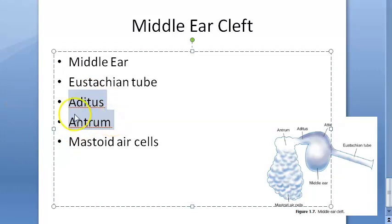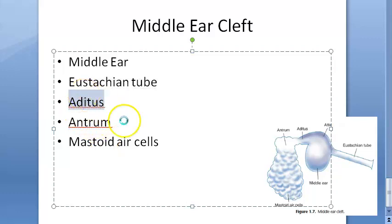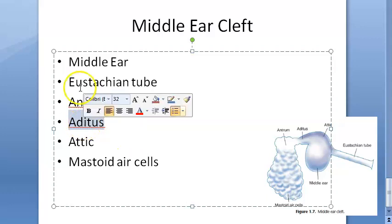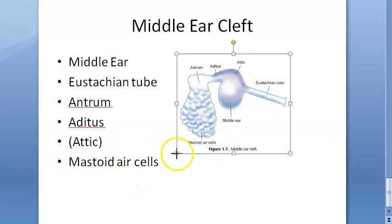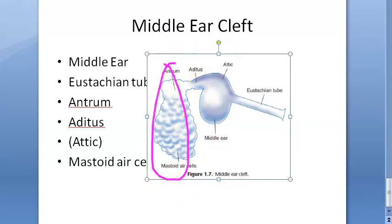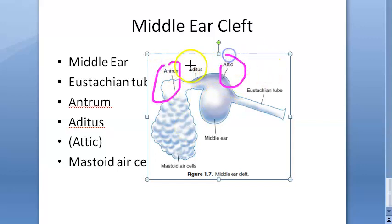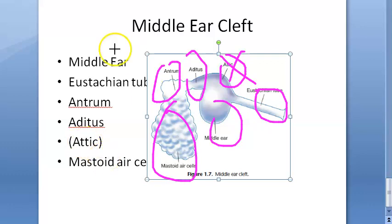The aditus is an opening through which the attic communicates with the antrum. The antrum, also called the mastoid antrum, is a large air-containing space in the upper part of the mastoid. So the antrum communicates with the attic through the aditus. Together, the middle ear, eustachian tube, antrum, aditus, and mastoid air cells form the middle ear cleft.